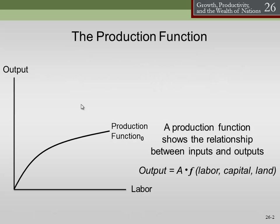The first thing we need to talk about is something called the production function. The production function is a mathematical representation of an economy's technology. You take this production function — it's a mathematical equation where you say, tell me how much labor we have, how much capital we have, how much natural resources we have. We take the inputs and then it tells us how much output we can get — and not just any output, but the maximal output that we can produce given that set of labor and our current technological processes.